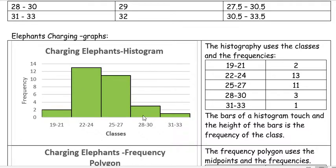When doing this, the classes are along the bottom or horizontal axis and the frequencies are on the vertical axis. You can give it some title—I called it Charging Elephants Histogram. When we use the histogram, we use the classes and the frequency, the most basic use of those things we had before.